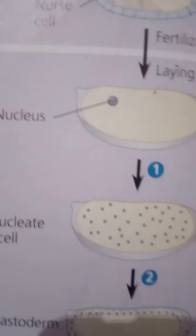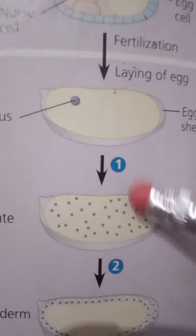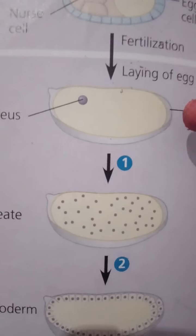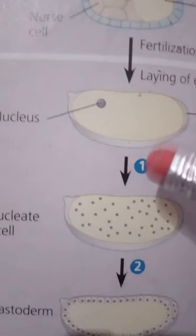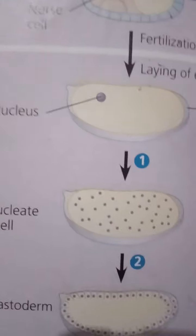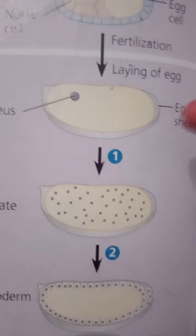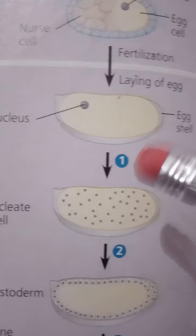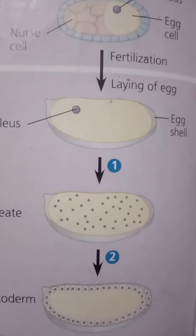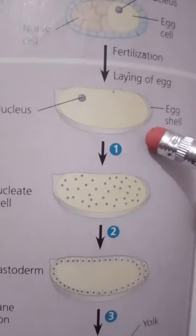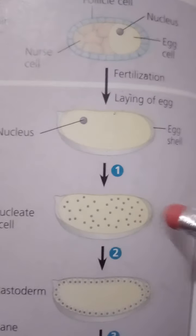Following fertilization and egg laying, the following events ensue. The first ten mitotic divisions have two notable features. First, these early divisions, which occur very quickly, consist of S and M phases only with no growth, so the amount of cytoplasm does not change. Second, cytokinesis does not occur. As a result, the early Drosophila embryo is one big multinucleate cell — in contrast to the embryos of many other animals.